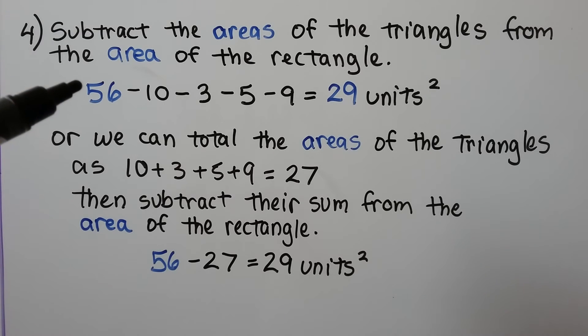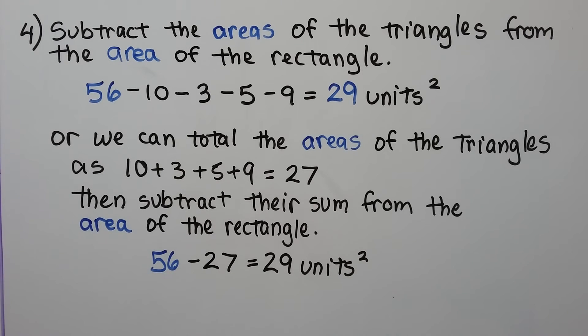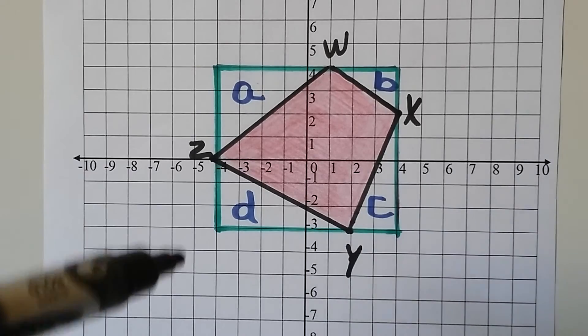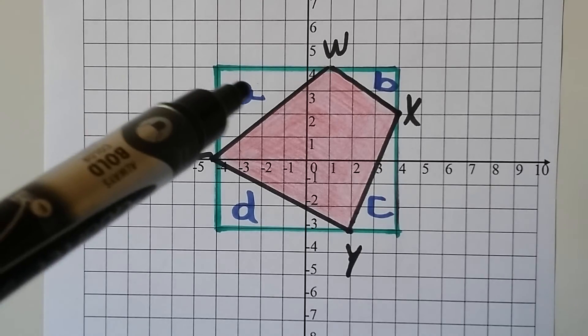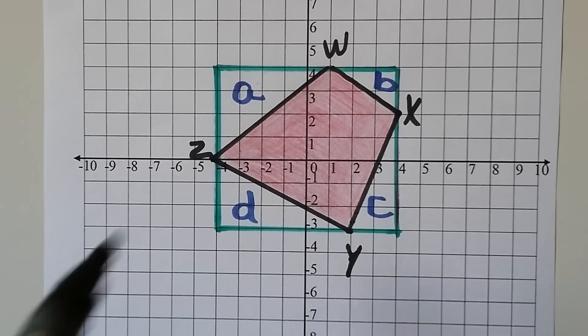Now all we have to do is subtract the areas of the triangles from the area of the rectangle. The rectangle was 56 units squared. We take off each of the triangles, and we come up with 29 units squared. If you find it easier, you can total the area of the triangles as a 27, and then subtract their sum from the 56 units of the rectangle. Whichever way you find easier, you're still going to get 29 units squared. So we found the area of this pink figure by making a rectangle around it, finding the area of the rectangle, then finding the area of each of the triangles, subtracting that from the rectangle, and we know whatever is left over must be the area of the pink figure.